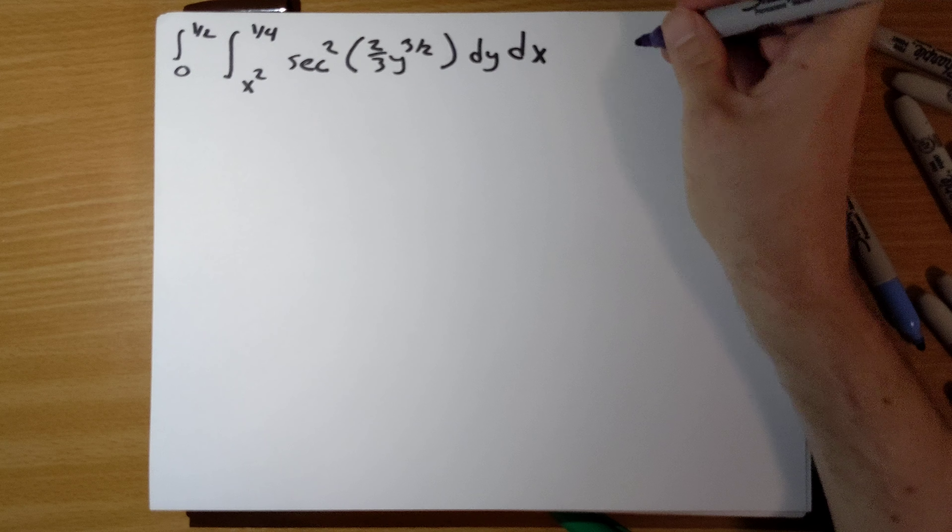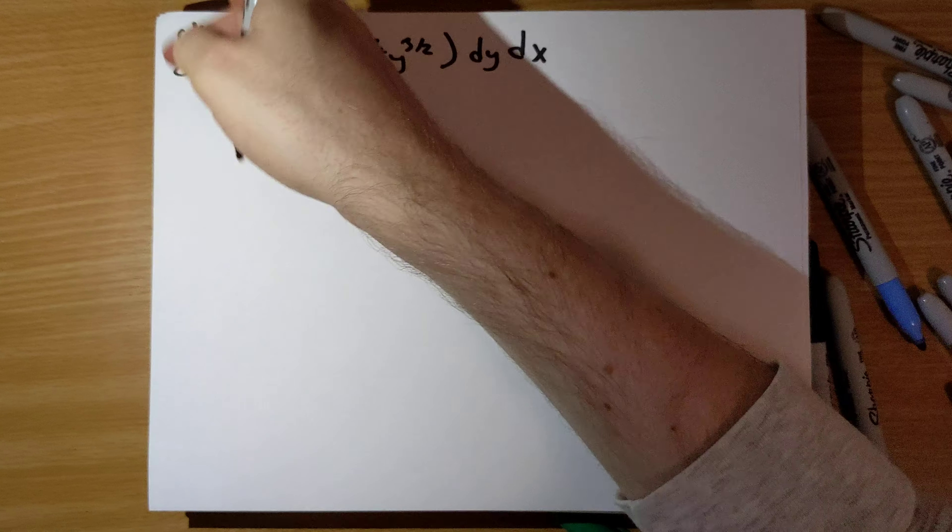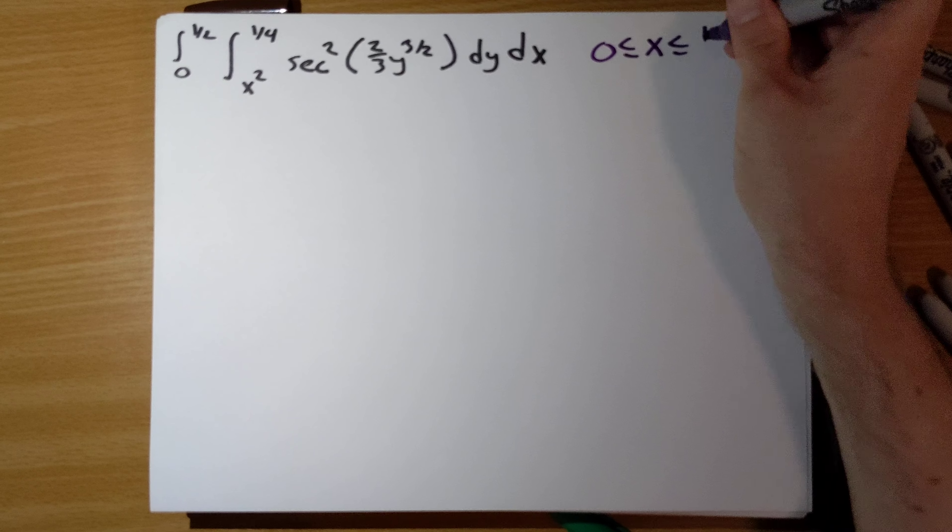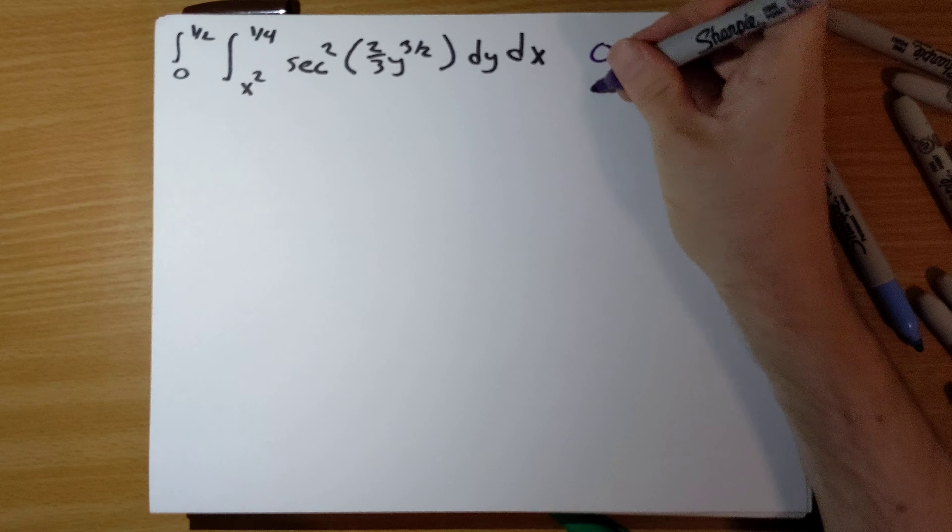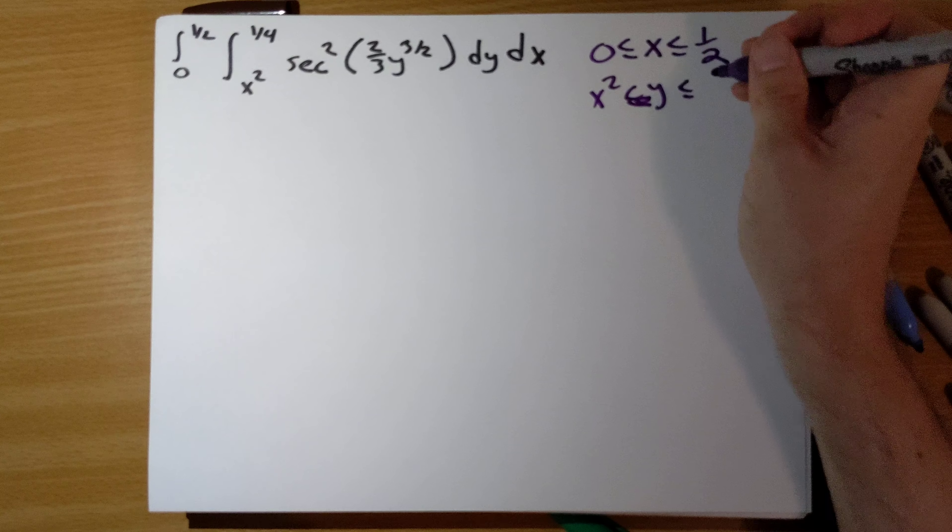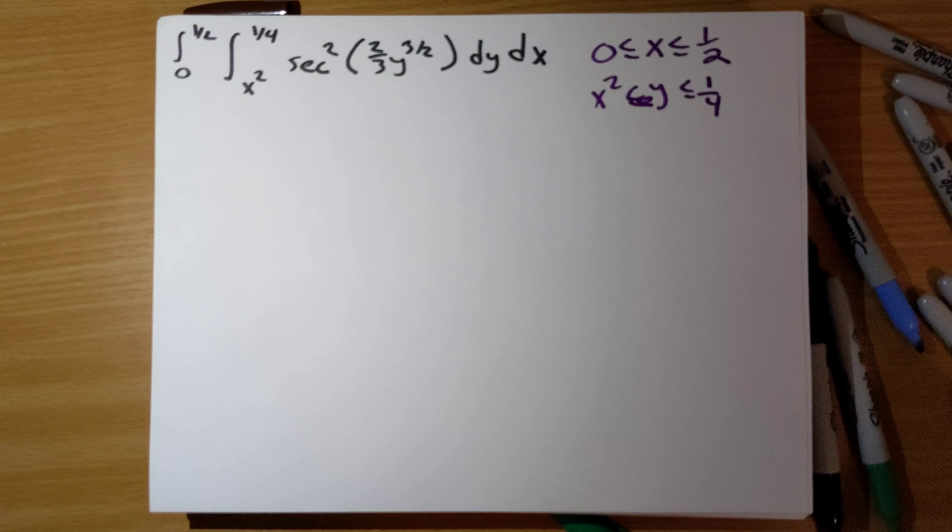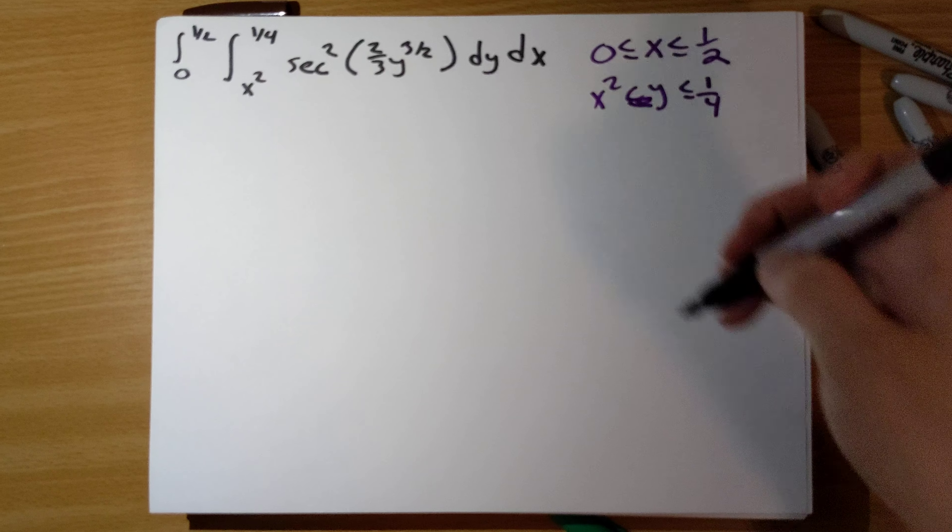Right now, x is running from 0 to 1/2, and y is running from x squared to 1/4. Okay, let's draw the picture.